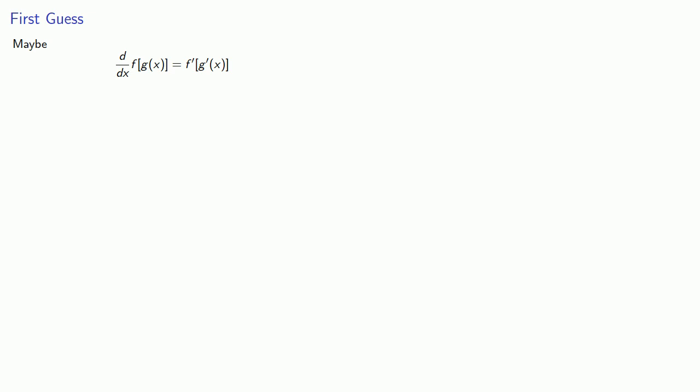Well let's see. So that says I have a square function, so maybe the derivative is 2, something to the first power, and then the derivative of the inside. But we know what the derivative is supposed to be, 8x plus 20, and so this can't be right.